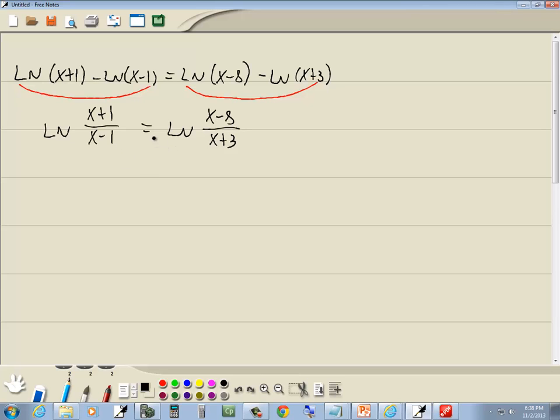Now once we get a single log on both sides, then we can drop the log part, the ln, and we've got x plus 1 over x minus 1 equals x minus 8 over x plus 3.